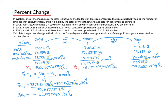The question asks us to round to four decimal places. Looking at the fourth decimal place, the digit to the right is not five or bigger, so we cut it off there. Our answer is negative 1.6470%. We keep the trailing zero to maintain four decimal accuracy.